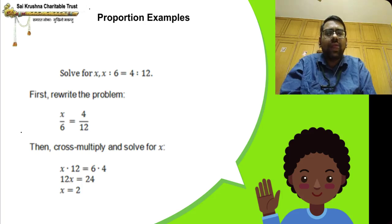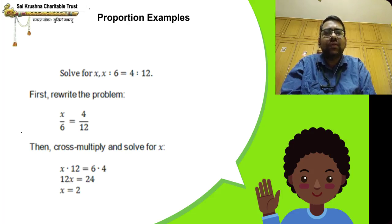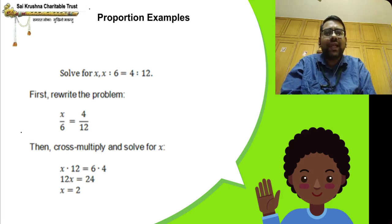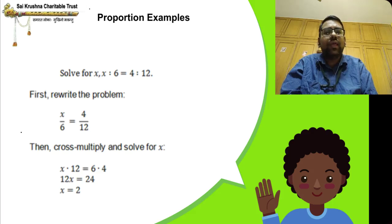Some more examples — solve for x: x is to 6 equal to 4 is to 12. In fraction form: x/6 = 4/12. We do cross multiplication: x into 12 equals 12x, equals 6 into 4, which is 24. Now divide both sides by 12, since 12 is attached to variable x. 12x/12 = 24/12, giving x = 2.